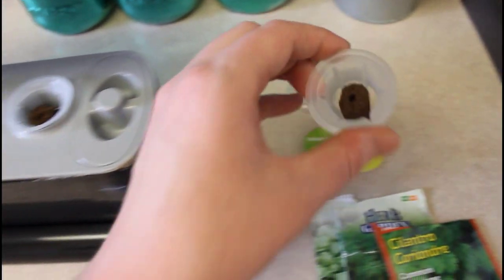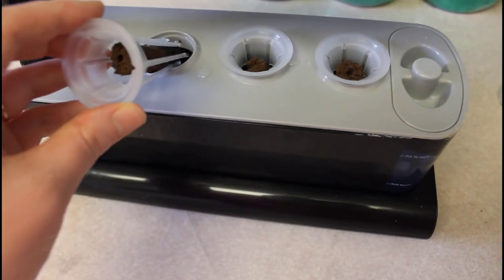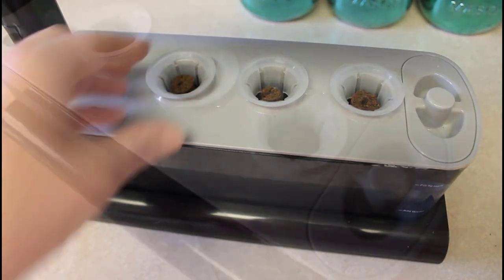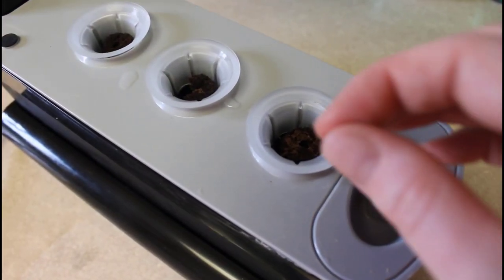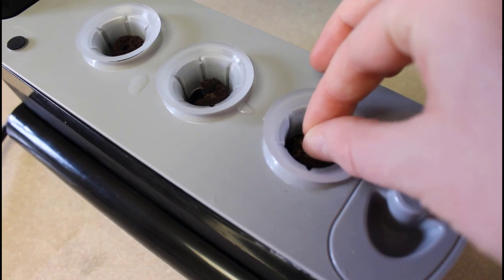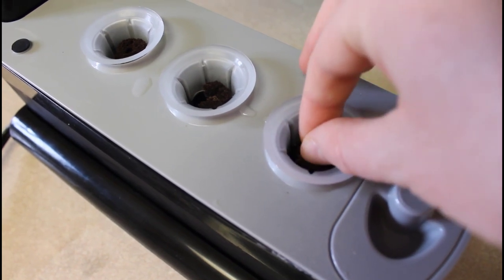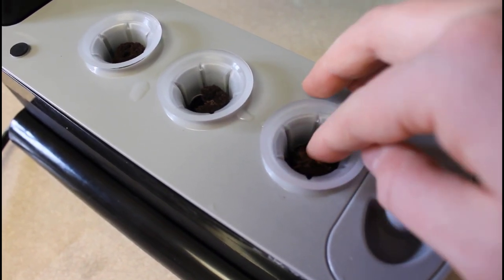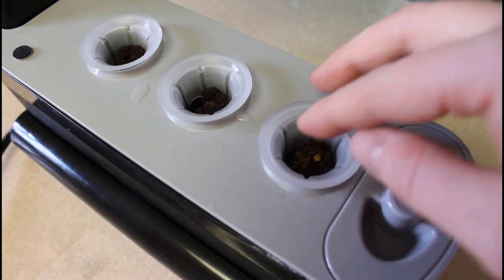From there I'm just going to be taking a seed. Here I have a cilantro seed and I'm going to be sowing the seeds by inserting it into the opening of the grow sponge.